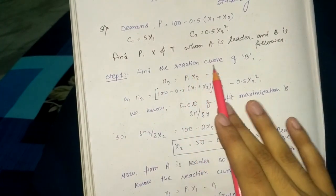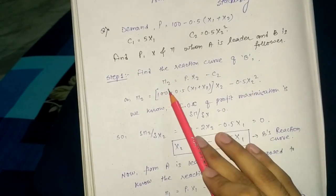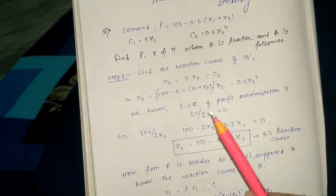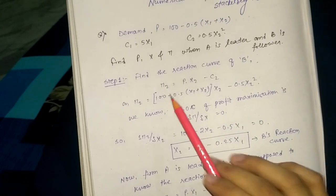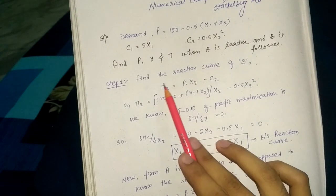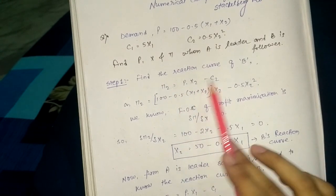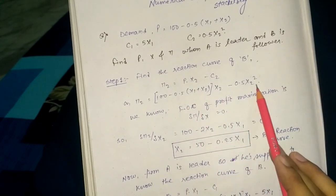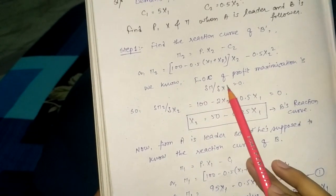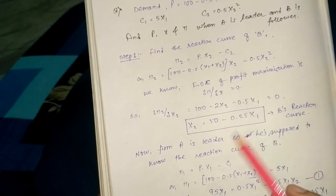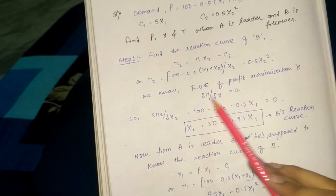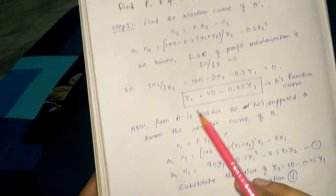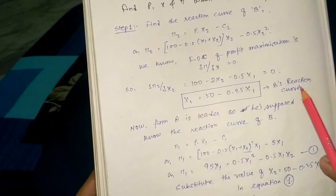Step one is we have to find out the reaction curve of firm B. Profit for firm 2 is given as P into X2 minus C2, as we know total revenue minus total cost. We can make our equation from this and solve it using the first order condition for profit maximizing, which is del pi by del X equals to zero. For firm 2 it is similar, so we can find out the reaction curve of firm B.